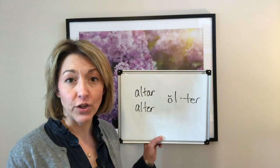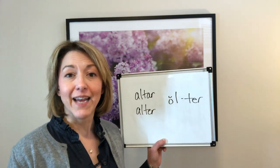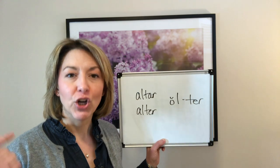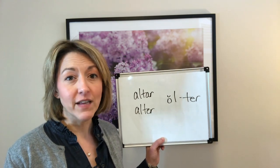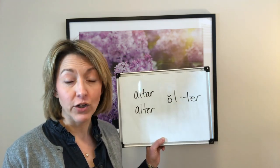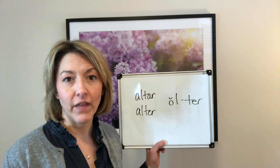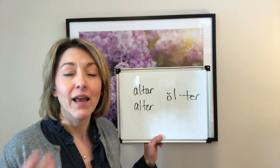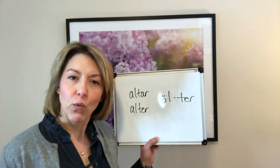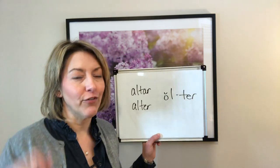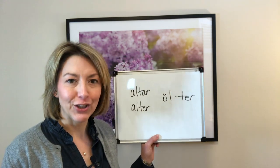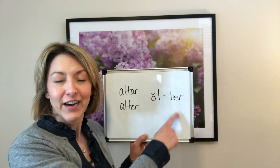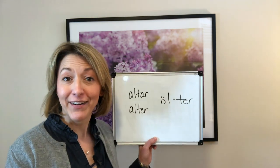Tip number two: keep your lips in a square, tense shape — 'er.' The reason for this is if you pucker too much it'll sound like a W, or if your mouth is too relaxed it'll sound like an 'uh' sound. So square, tense lips, tip of the tongue down or flipped back — 'er, ter, ter.' Let's put it all together.